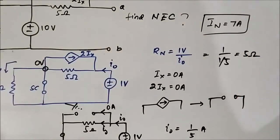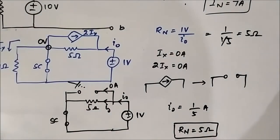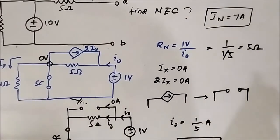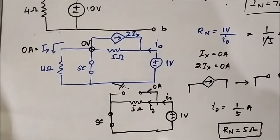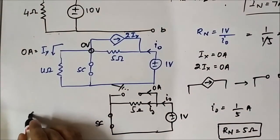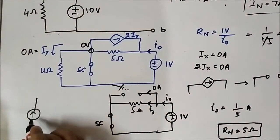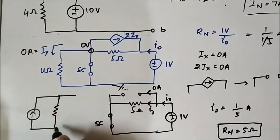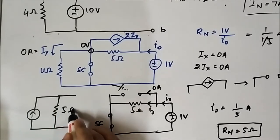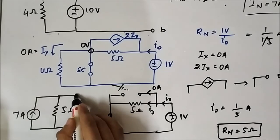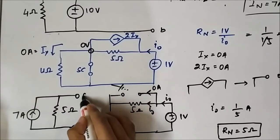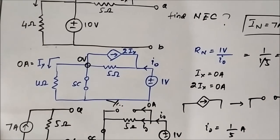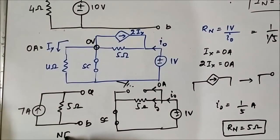So IN equals 7 ampere and RN equals 5 ohm. We have determined the two parameters required for constructing the Norton equivalent circuit. The Norton equivalent circuit consists of a 7 ampere current source in parallel with a 5 ohm Norton resistance, connected across terminals A and B.